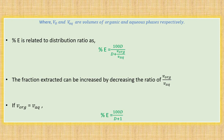The relationship between percentage extraction and distribution ratio is important. The relationship is given by: percentage extraction equals 100D divided by (D plus V_aqueous divided by V_organic). You can write this relationship as 100D divided by (D plus V_organic divided by V_aqueous).